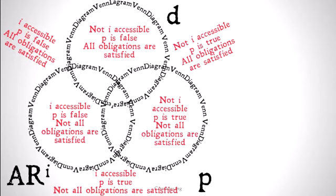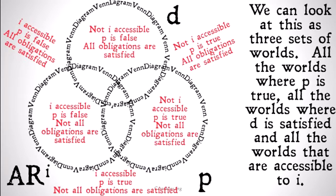I just said a lot of words, and that might seem to have overcomplicated things. If you understand how a Venn diagram works, you should understand the basic concept here: everything in the D circle is something where all obligations are satisfied, everything in the ARI circle is something that is I-accessible, everything in the P circle is a world where P is true, and if it doesn't overlap, then it doesn't hold with that circle. If you're not clear on that, check out the series on categorical logic for more.